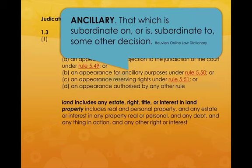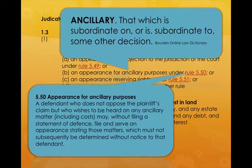We're going to look at B — an appearance for ancillary purposes. 'Ancillary' means that which is subordinate to some other decision, from Bouvier's online law dictionary. So we're going to make an appearance, which is an address for service, but it's subordinate. Under Rule 5.50, a defendant who does not oppose the plaintiff's claim but who wishes to be heard on any subordinate matter may, without filing a statement of offence, file and serve an appearance stating those matters. An appearance is an address.